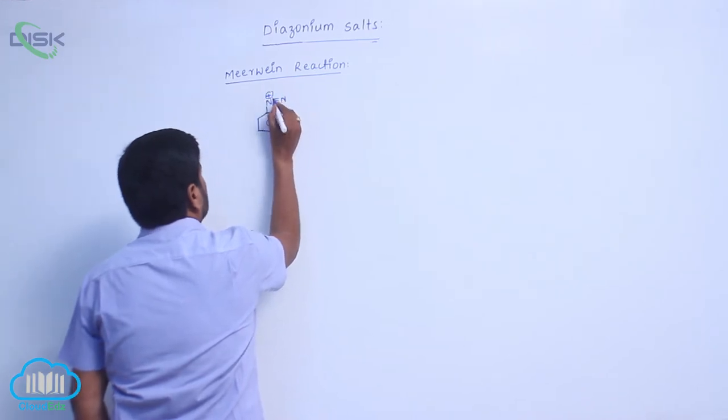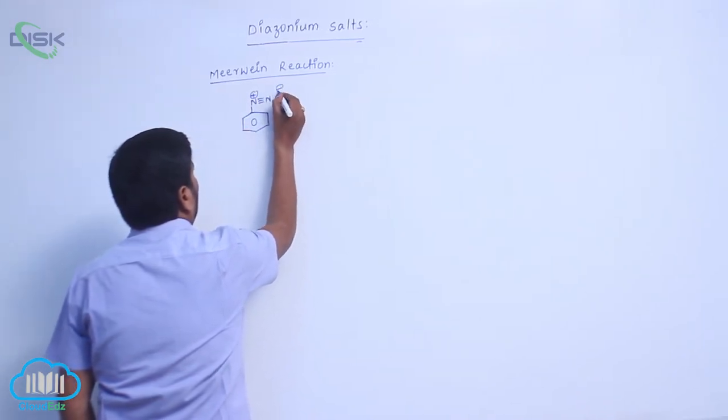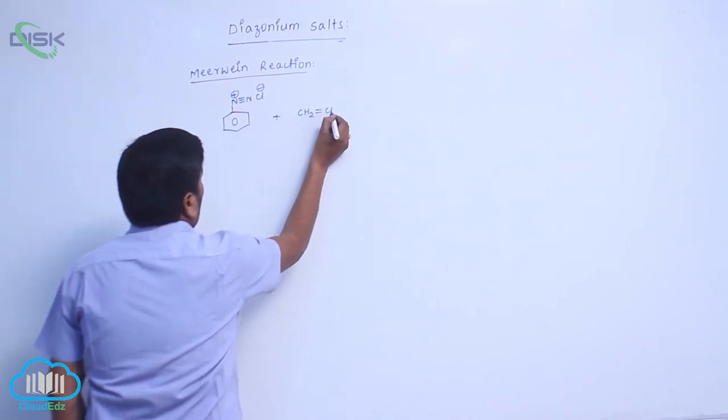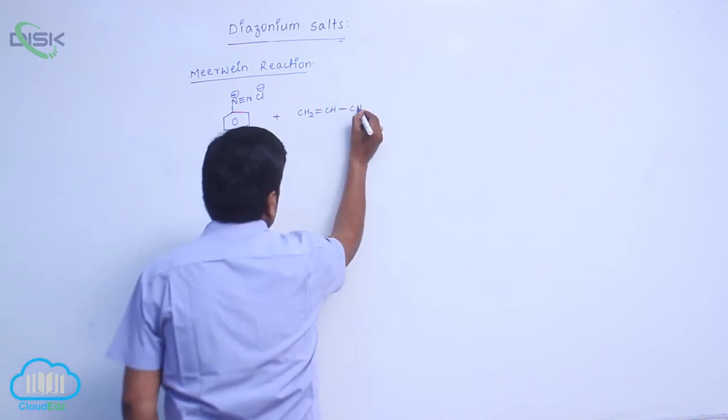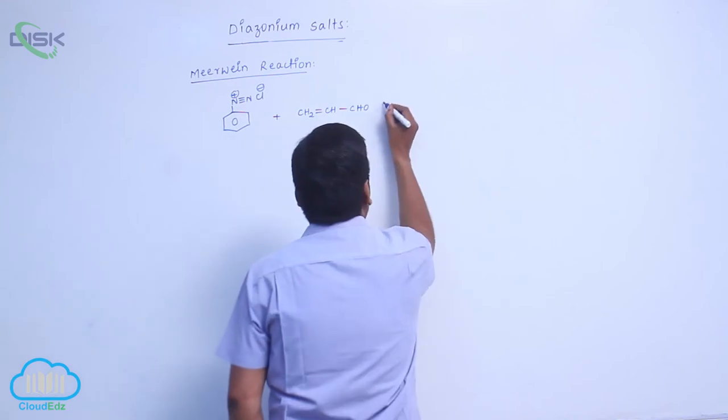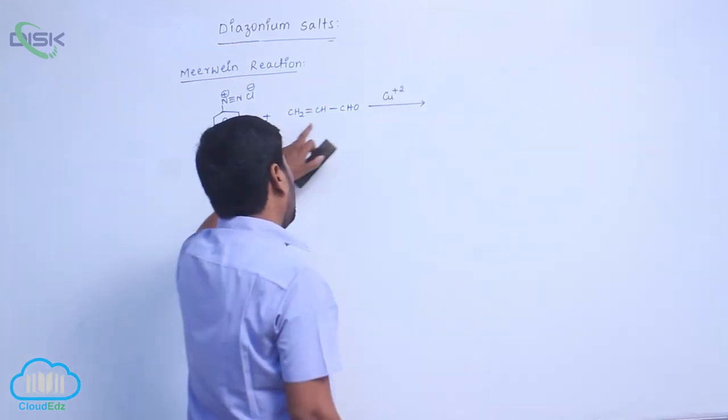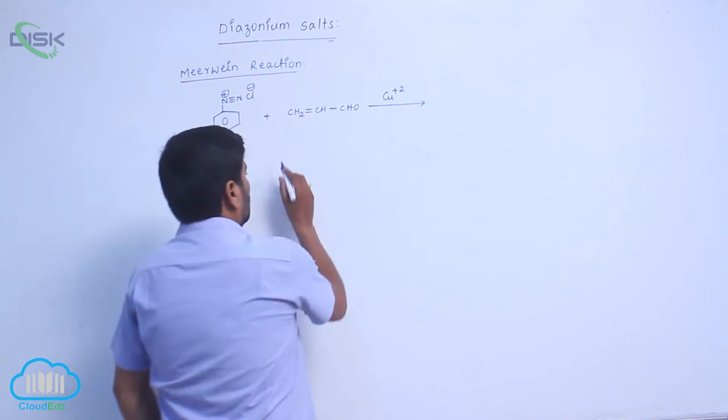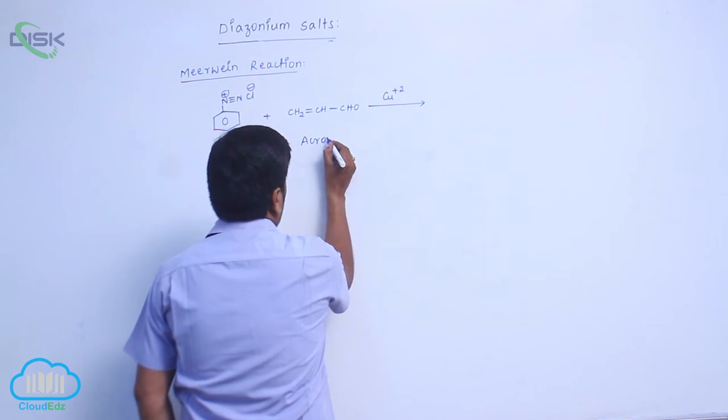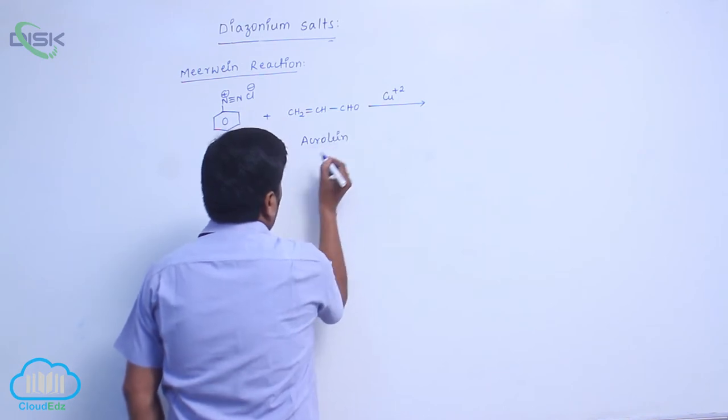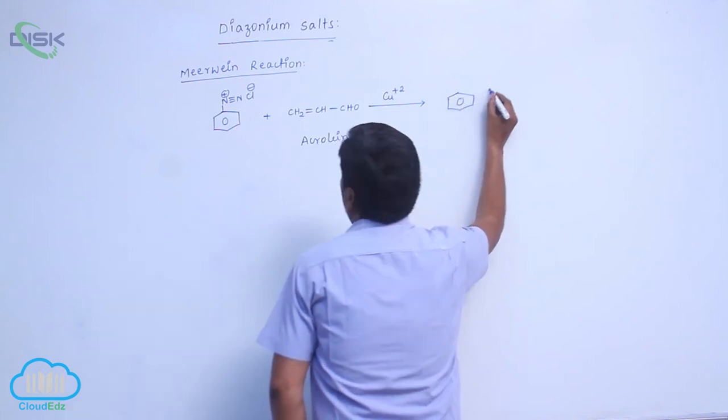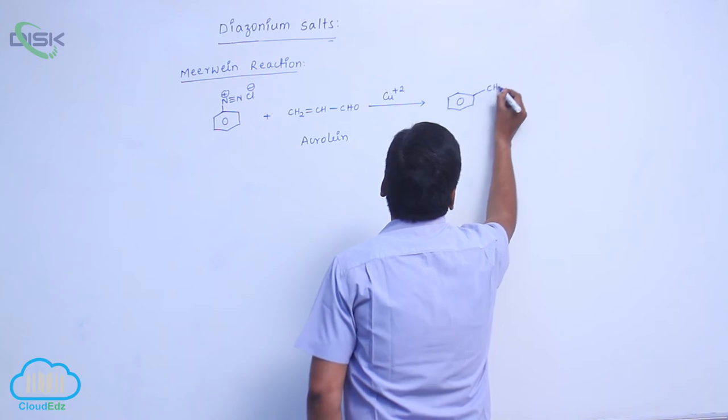Benzene Diazonium Chloride reacts with alpha, beta unsaturated compounds. Diazonium Chloride reacts with acrolein. It is CH2...